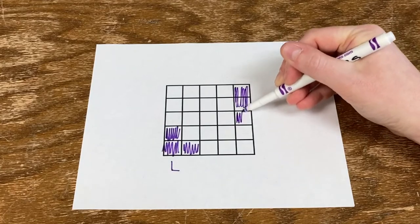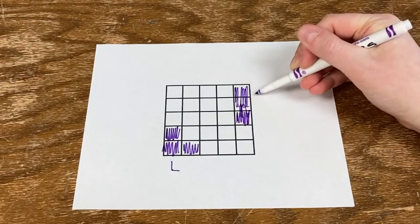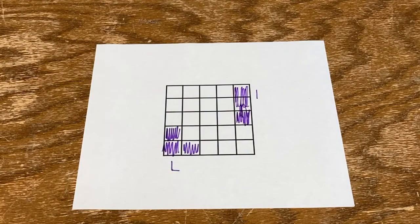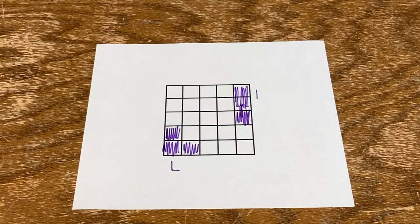Before you begin, decide whether you will play with both L-shaped and I-shaped Trominoes, or just L-shaped Trominoes. Trominoes can be rotated any way to make them fit.